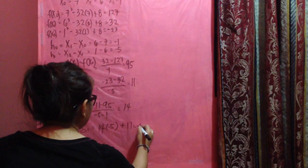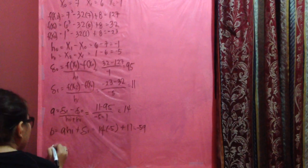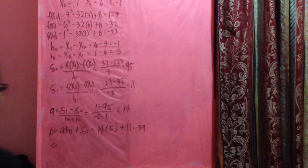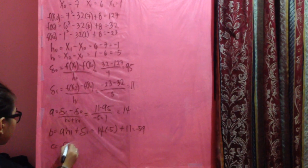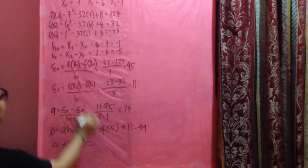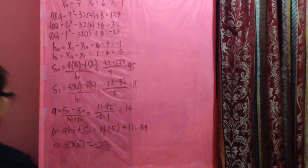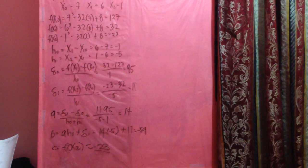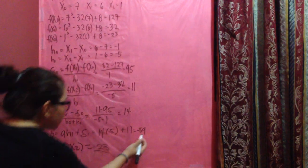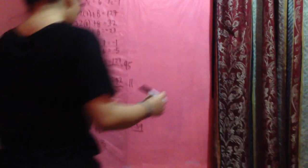And for C, C equals the f(x₂). f(x₂) is negative 23. Here we have to get the value of x₃.